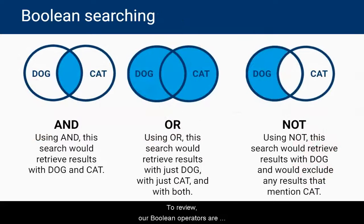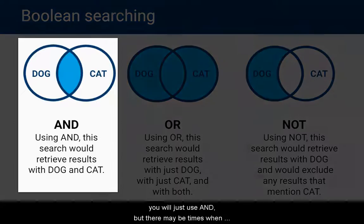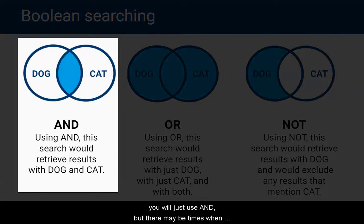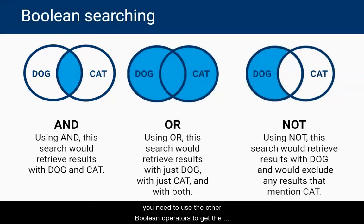To review, our Boolean operators are AND, OR, and NOT. Most of the time you will just use AND, but there may be times when you need to use the other Boolean operators to get the best search results.